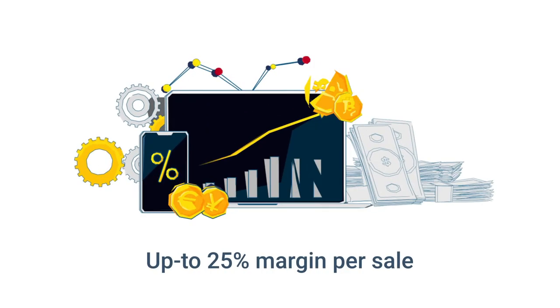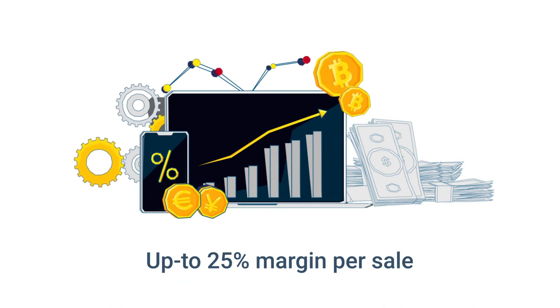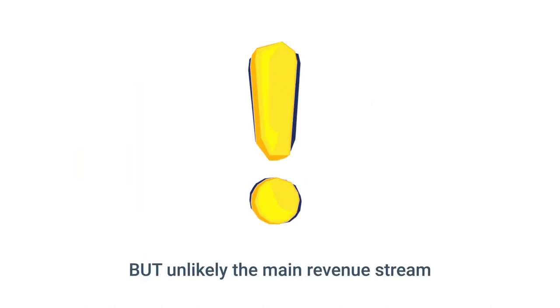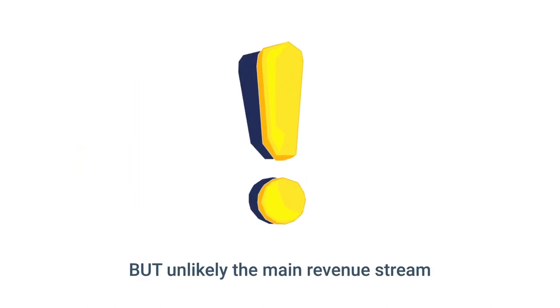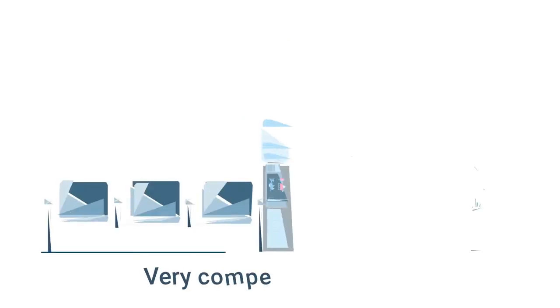Though CSP partners can earn up to 25% margin per sale of a CSP product because they control their own markups, it is unlikely to reach that level, and margins are not the main revenue stream in the CSP program.